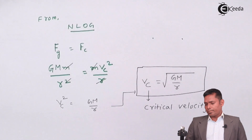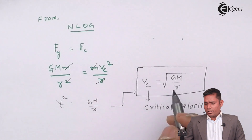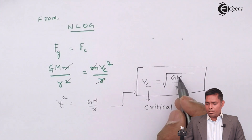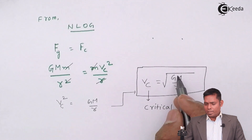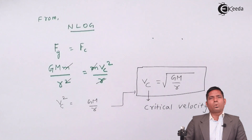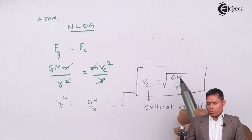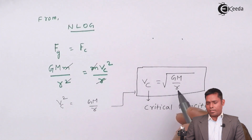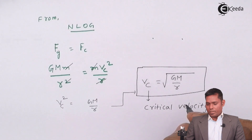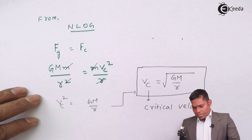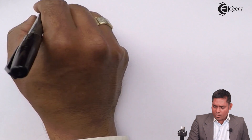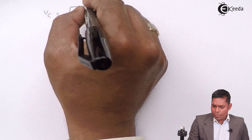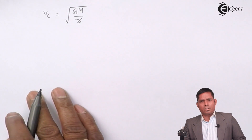This is the formula to remember: critical velocity Vc equals square root of GM over r, where G is the universal gravitational constant, M is the mass of the planet, and r is the orbital radius equal to R plus H. Importantly, it is independent of the mass of the object which is revolving.